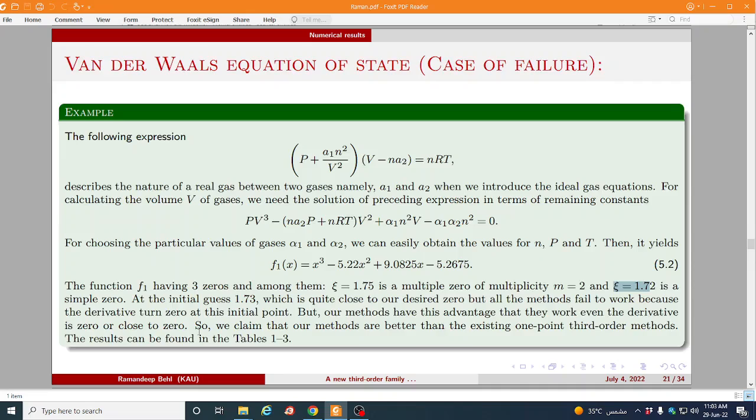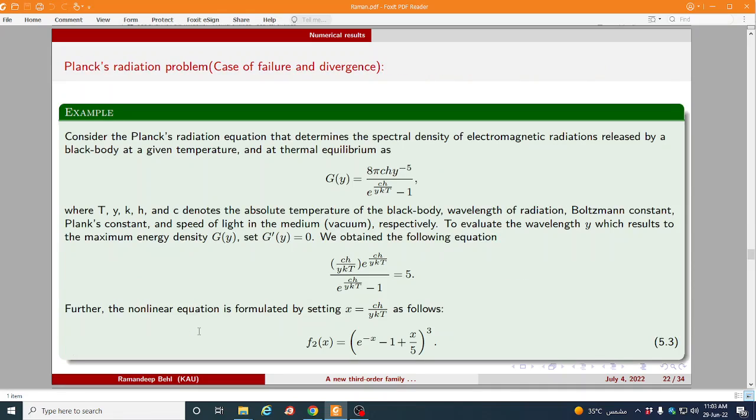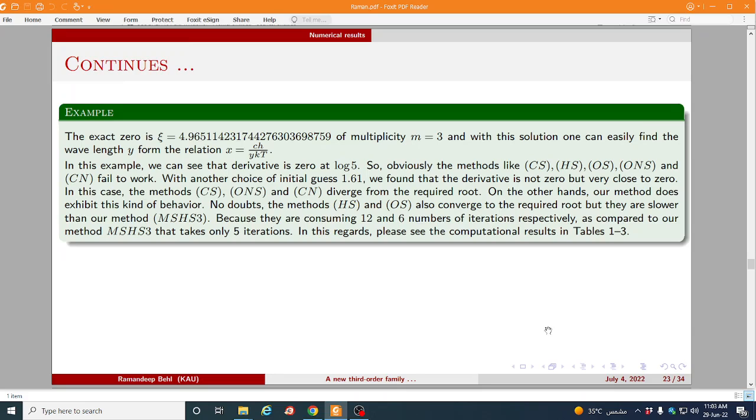But our method has an advantage that even the derivative is zero or close to zero we will get a result for that. Then we choose another problem case of failure and divergence. We have this Planck radiation problems and after simple equation we can get equation 5.3. Clearly this equation have a root like this 4.95 something and with multiplicity m is equal to 3.